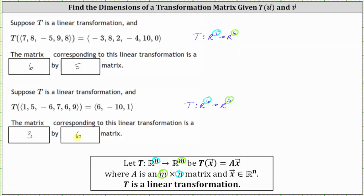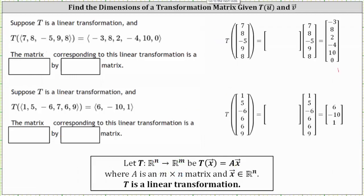The other option would be to actually look at the product of matrix A and the input vector equaling the output vector. So here on the right, the transformation of the input vector is equal to some matrix A times the input vector, which is equal to the output vector, where matrix A would be an M by N matrix. The input vector is written as a five by one matrix and the output vector is written as a six by one matrix.